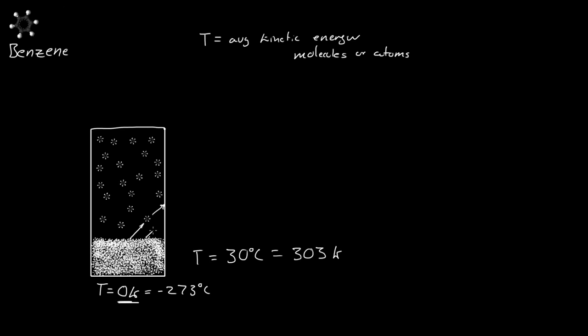As more molecules bounce out, it increases the probability of more molecules going back into the liquid. They'll be attracted to the liquid and may not want to bounce back out. So there comes a point where the number of molecules leaving equals the number entering back in — and that is called the saturated pressure.